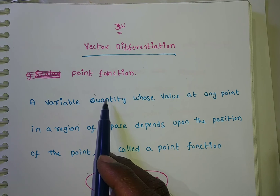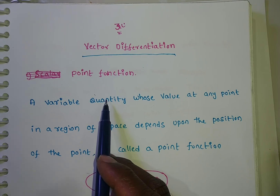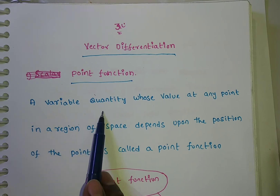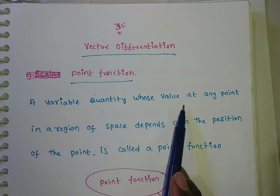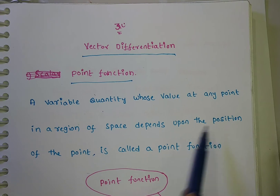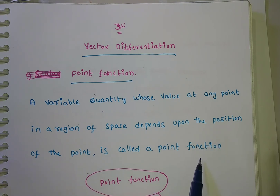Point functions are of two types: one is a scalar point function and another one is a vector point function. First, let us discuss what a point function is. Point function means: a variable quantity whose value at any point in the region of space depends upon the position of the point is called a point function.